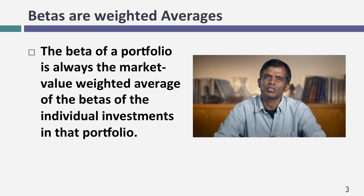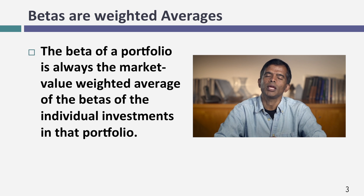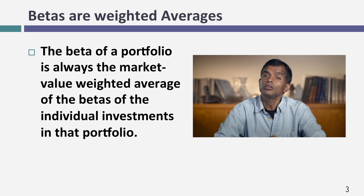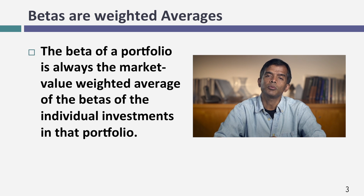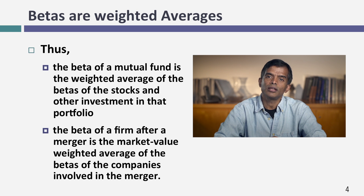To understand what we're going to do, let me lay out a property that betas have that makes them incredibly easy to work with: betas are always weighted averages. Let's take an example — a mutual fund like Fidelity Magellan with hundreds of stocks in the portfolio. The beta of that portfolio is a weighted average of the betas of the individual stocks in proportion to how much money you've invested in each one. That's true whether you have five, 50, or 500 stocks.